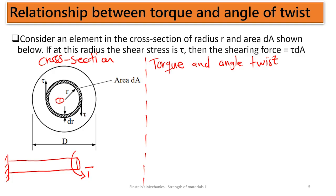We want to understand the derivation, so we have to take just a small portion of the surface and derive an understanding from it. Whatever is happening in the small portion can be integrated to the larger scale. From the middle of the bar we are going to have a radius to the section we are considering. This is a radius r, and from that radius r we are taking just a small radius dr, and we are also taking a small area called dA.